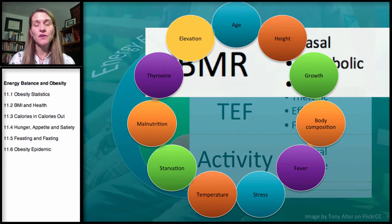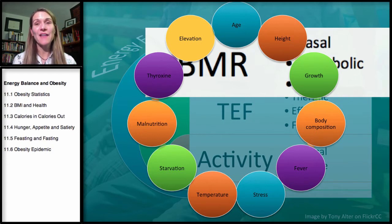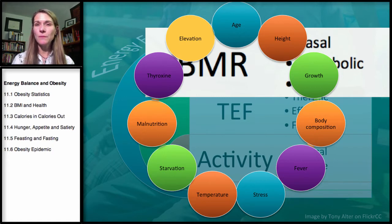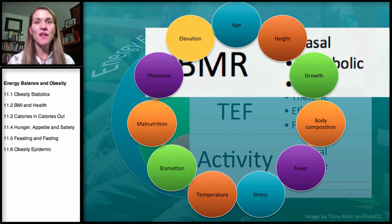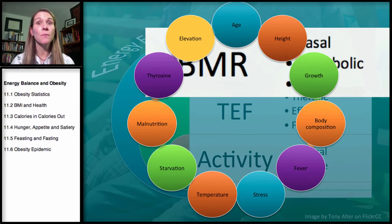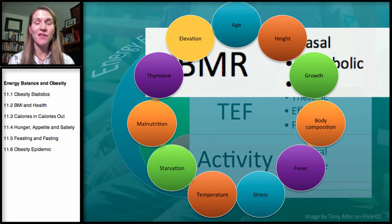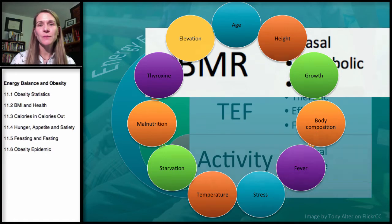Elevation is another factor: the higher the elevation, the more energy you expend just by being there. This relates to why Colorado, with its colder winters and higher elevation, has the lowest obesity rates in the nation — Denver and Boulder specifically have the two lowest obesity rates. The proposed theory is that colder climate and higher elevation together drive greater energy expenditure.